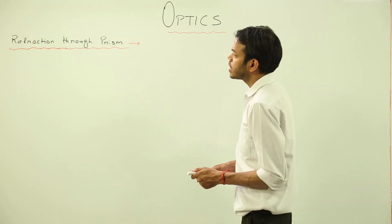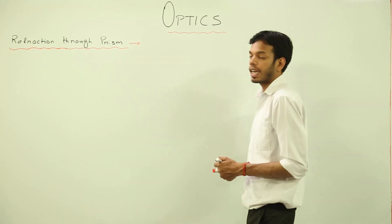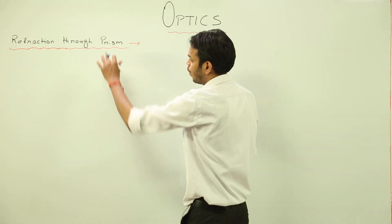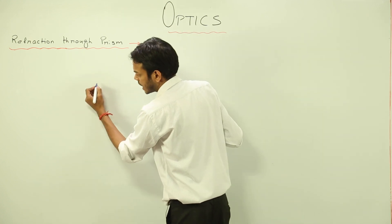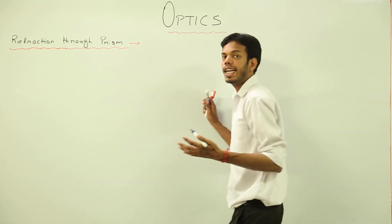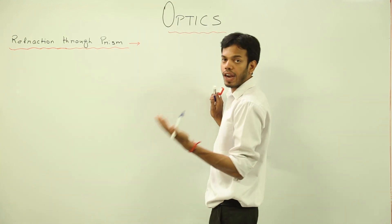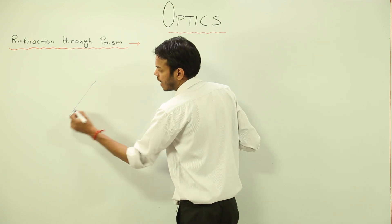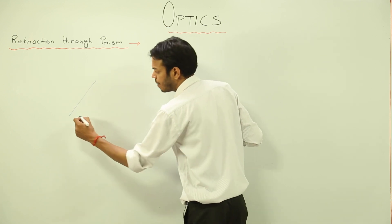Hello everyone, we will start with the refraction through prism now. We know the structure and how light deviates or gets refracted from a prism. This is my rough diagram.